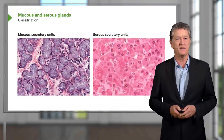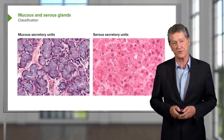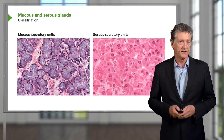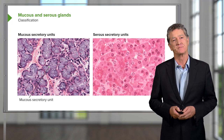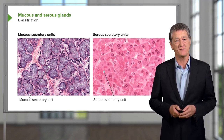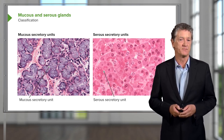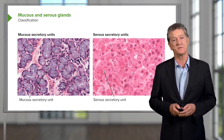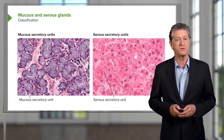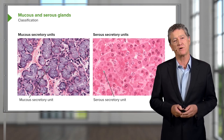In this slide, you can see two images — two histological sections taken through two different exocrine glands. One is dominated by mucous secreting units, the other by serous secreting units. You can see they stain very differently. In the case of the mucous secreting cells, the bluey tinge or the light staining is due to the component of the secretory product.